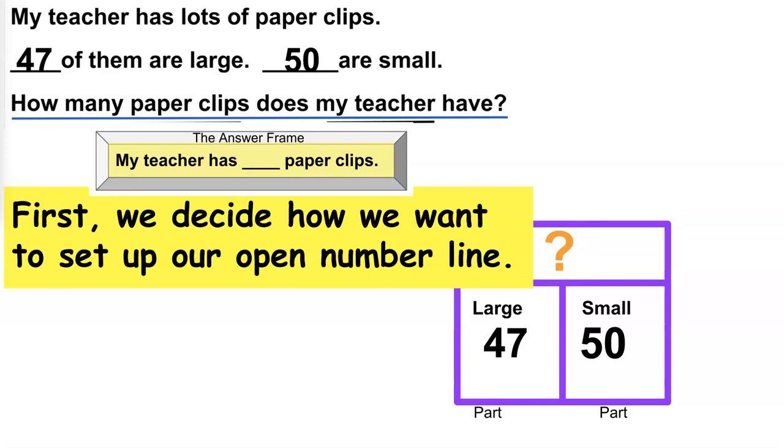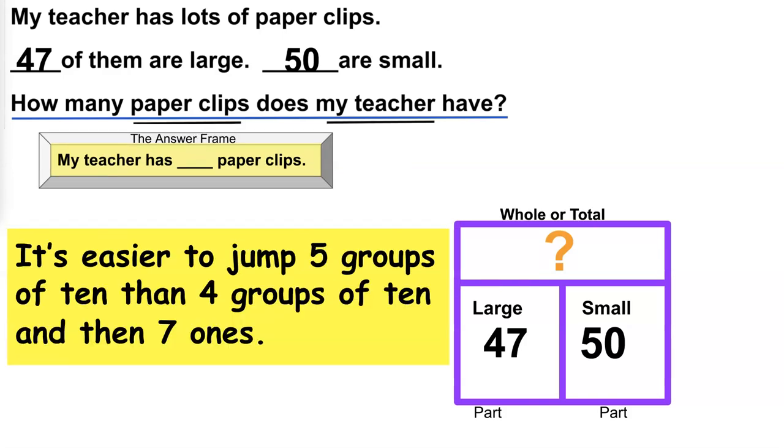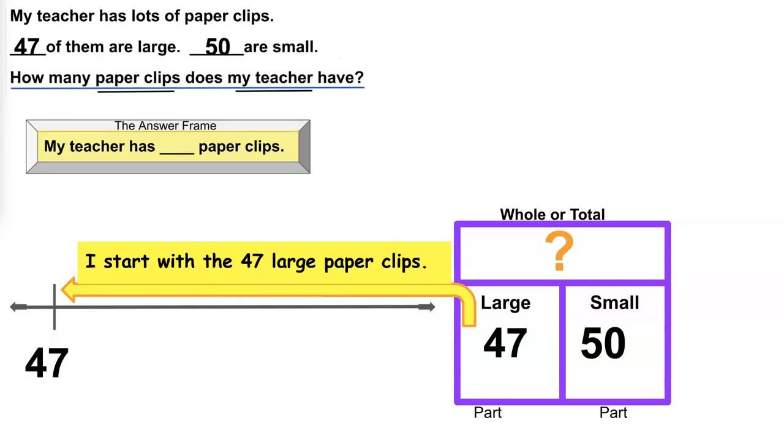First, we decide how we want to set up our open number line. It's easier to jump 5 groups of 10, then 4 groups of 10, and then 7 ones. So I start with the 47 large paperclips.